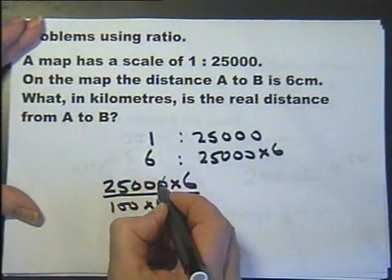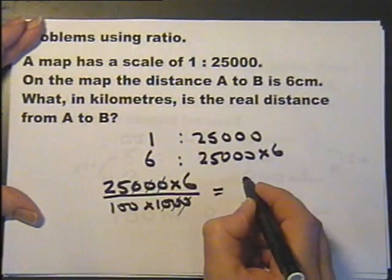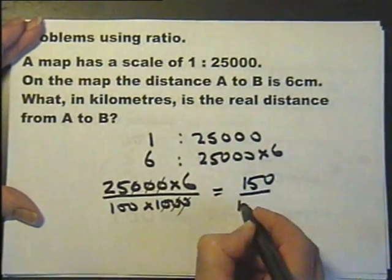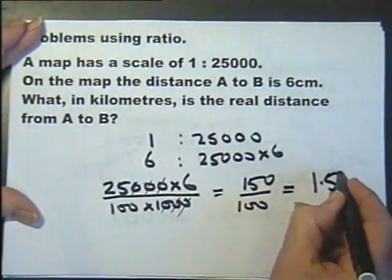We'll chop off those three noughts and do 625 divided by 5 is 150. And that cancels, doesn't it? That's 1.5. There you go.